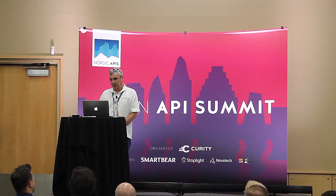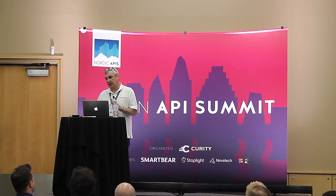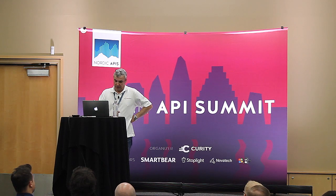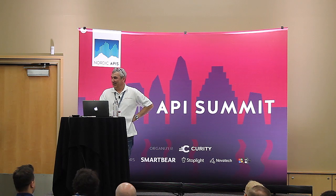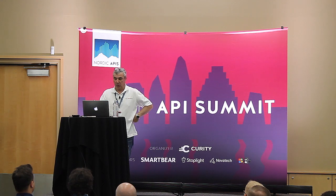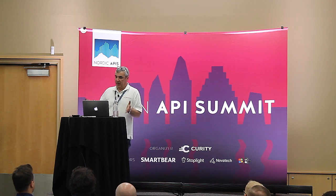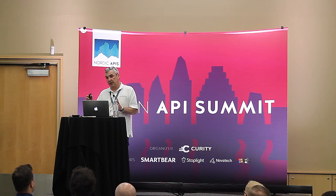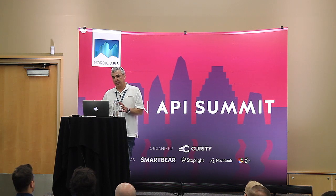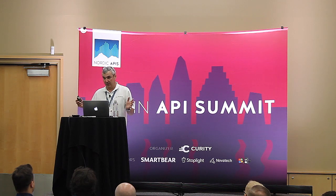I want to talk about only one particular aspect, which is explicitly in the context of API management. I'll try to convince those who need convincing that API management is actually one of the major ways to help address common API security challenges. Within API security, I'm going to focus only on a few particular aspects that have to do with authentication and authorization, simply because security is so much more than that — also referring to monitoring, logging, and auditing.